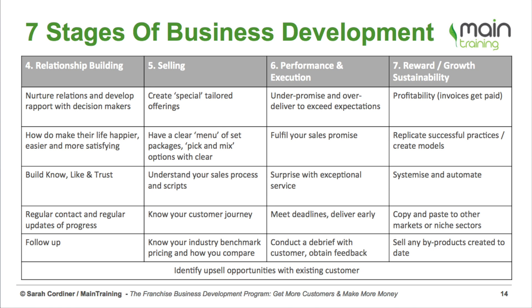Finally, stage seven is our reward, growth, and sustainability phase. This is when we get profits, when our invoices get paid, and when we can replicate the successful practices we've put in place. It's when we can create models and frameworks around what worked for us in making that sale, create more systems and automation within our company, and establish habits and systems for doing everything. As we grow, our lives become easier, and it becomes more simple to eventually move ourselves away from the business — whether that's selling it or taking on staff.